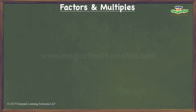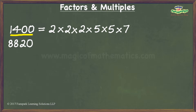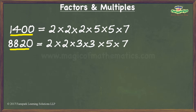I will take up an example to examine the rationale and using the example establish that this is a generic property applicable to any two numbers. For my illustration I will take the numbers 1400 and 8820. When I prime factorize 1400 I get 2 times 2 times 2 times 5 times 5 times 7, and when I prime factorize 8820 I get 2 times 2 times 3 times 3 times 5 times 7 times 7.